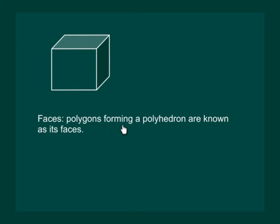Polygons forming a polyhedron are known as its faces. For instance, in a cube, squares combine to make the cube. So each of the square is the face of this cube.